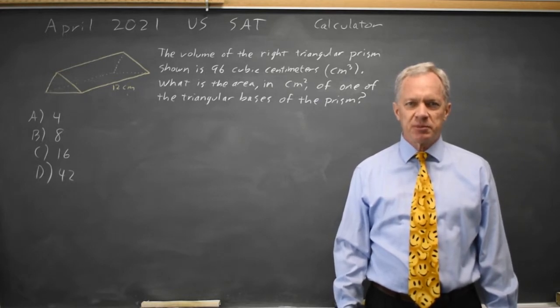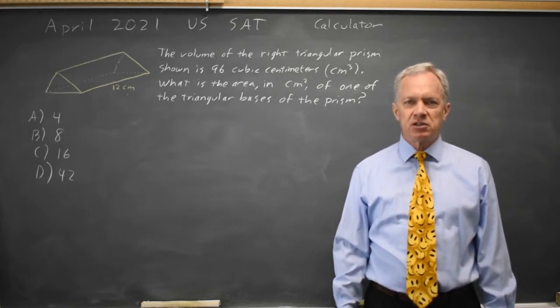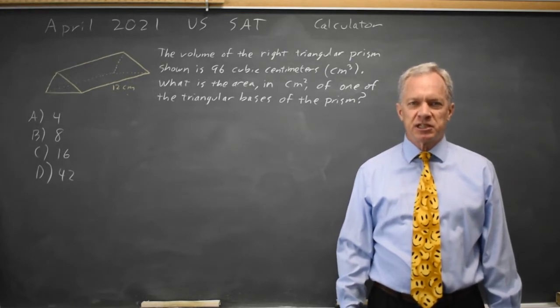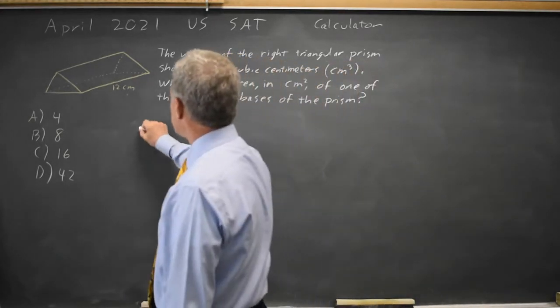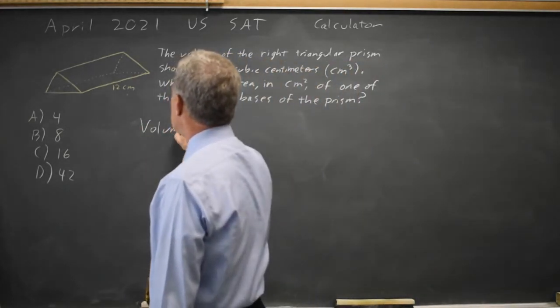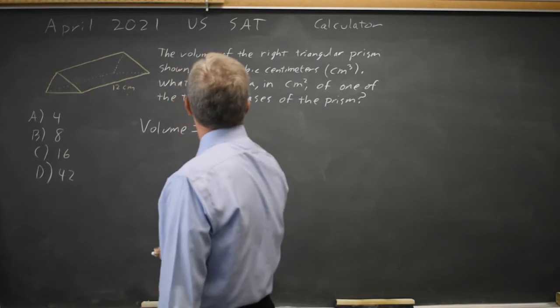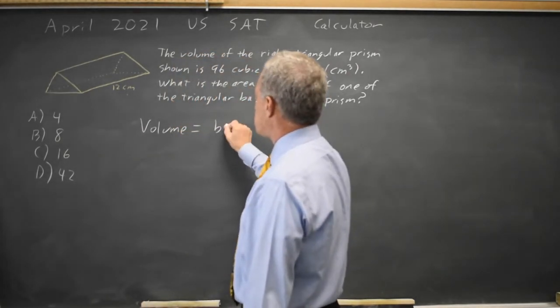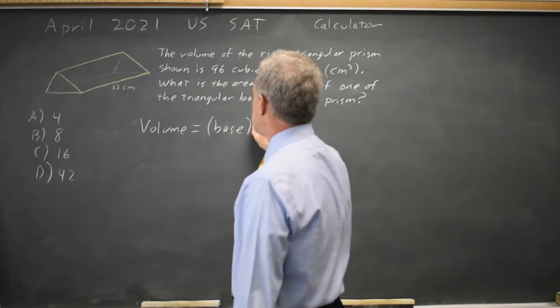The College Board is asking a three-dimensional geometry question and they do not give us the formula we need in the formula sheet at the start of each math section. But we should know that the volume of a right prism is the area of the base times the height.